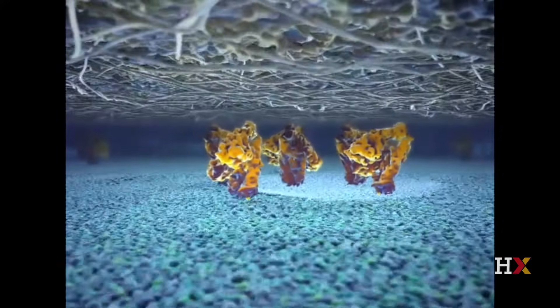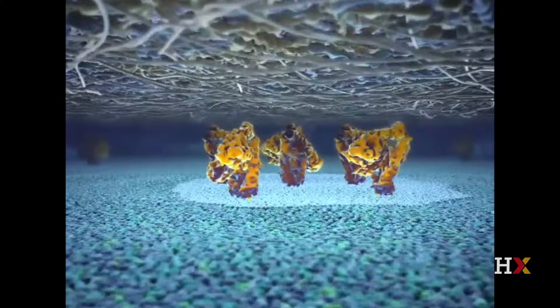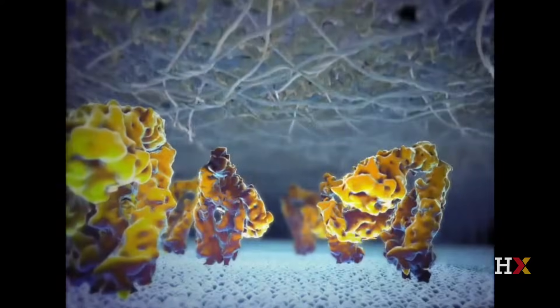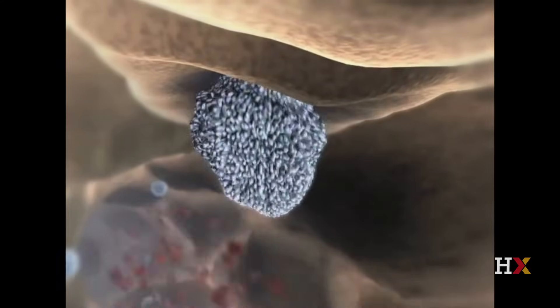These proteins can change their shape dramatically in response to external signals. These changes in shape allow them to bind to other proteins, which in the case of this macrophage causes it to stop rolling.